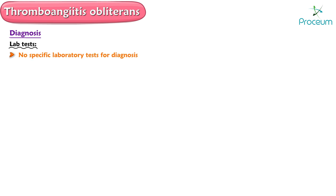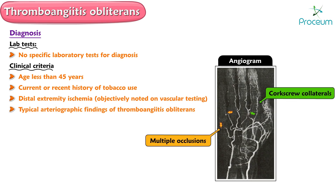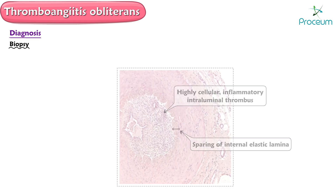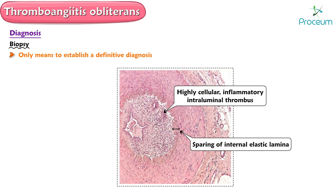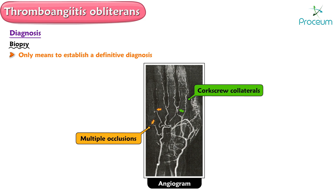There are no specific laboratory tests to diagnose thromboangiitis obliterans. A clinical diagnosis can be established with the following commonly used criteria: age less than 45 years; current or recent history of tobacco use; distal extremity ischemia objectively noted on vascular testing; typical arteriographic findings of thromboangiitis obliterans; and exclusion of autoimmune disease, thrombophilia, diabetes, and proximal embolic sources. Biopsy is rarely needed but is the only means to establish a definitive diagnosis. The angiogram shows multiple occlusions of the digital arteries with collateralization and corkscrew collaterals around the areas of occlusion.